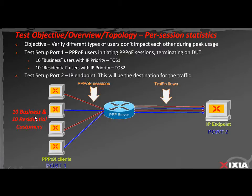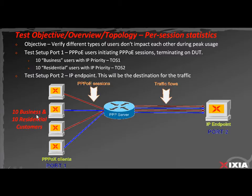The test setup includes, on port 1 on the left hand at the bottom of your screen, 10 business and 10 residential PPPoE customers coming into the DUT, the PPPoE server, for a total of 20. Ten of them will have a higher IP priority ToS than the other 10.